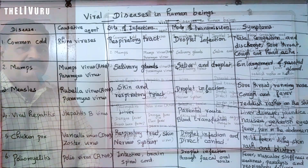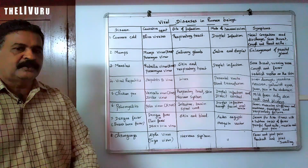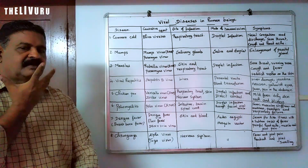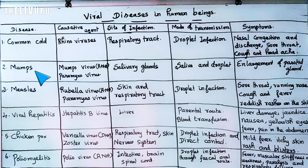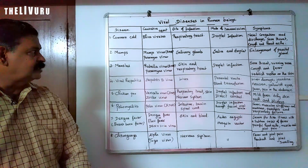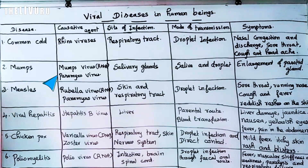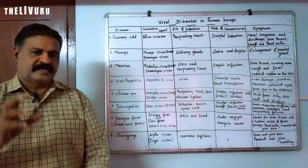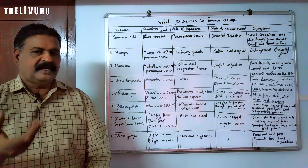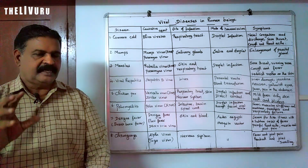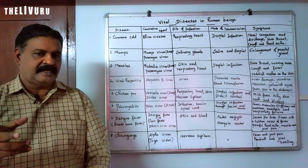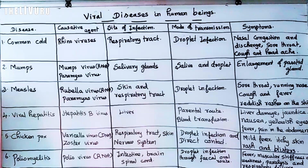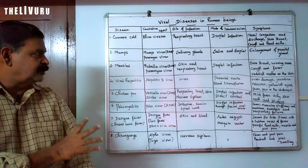The second disease is mumps. The causative agent is the mumps virus, otherwise called paramyxovirus. It is an RNA virus. If we look at a virus structure, there will be a genetic material — it may be DNA or RNA, but never both. It also has a capsid.